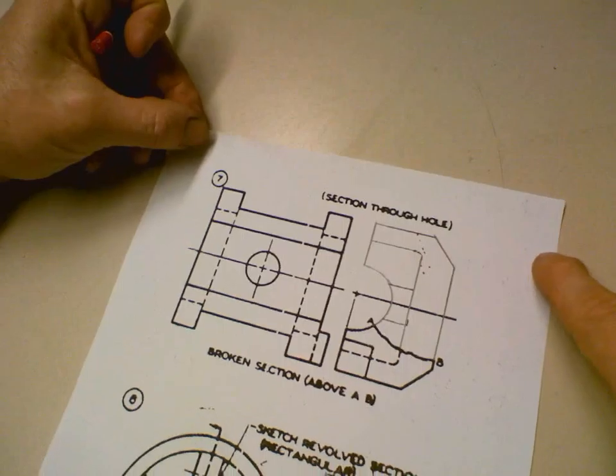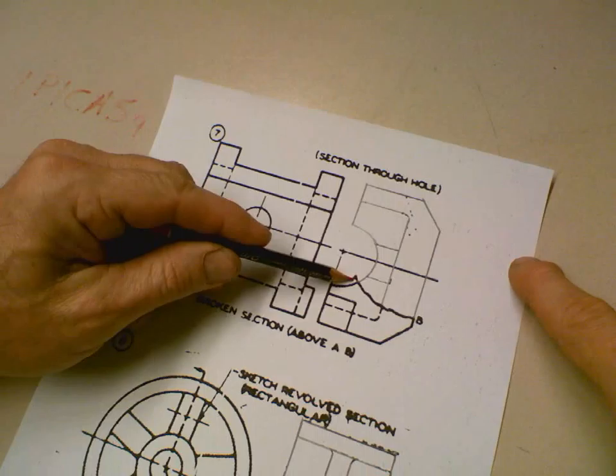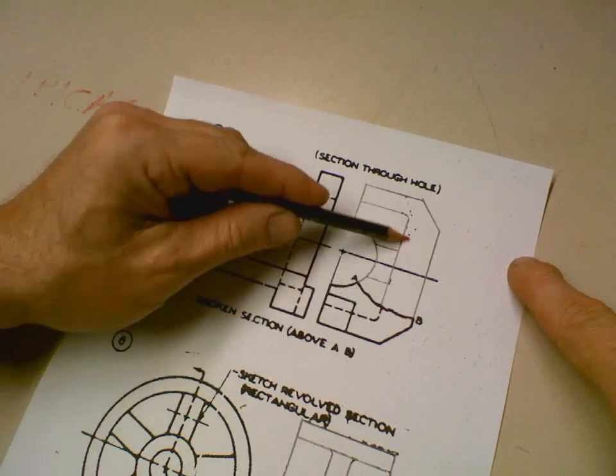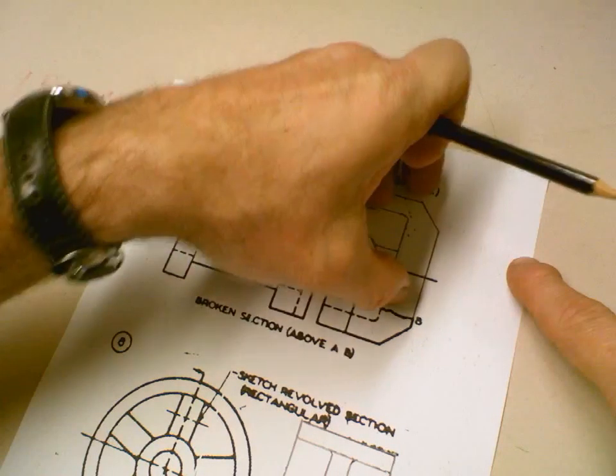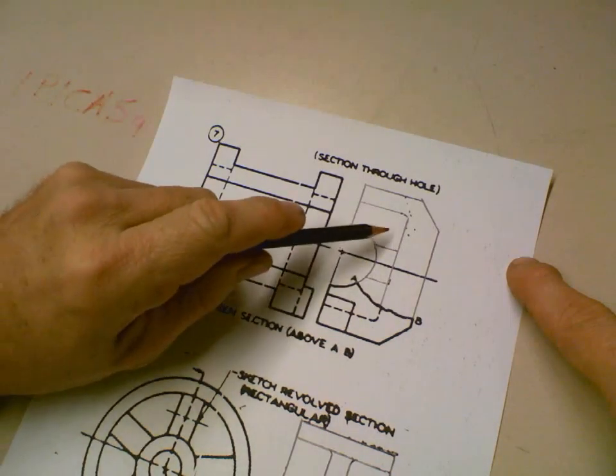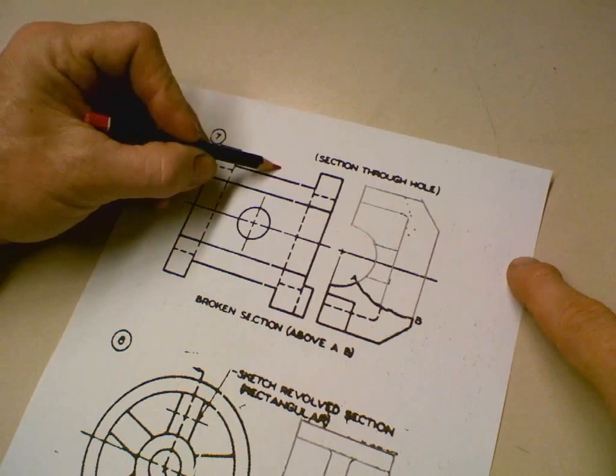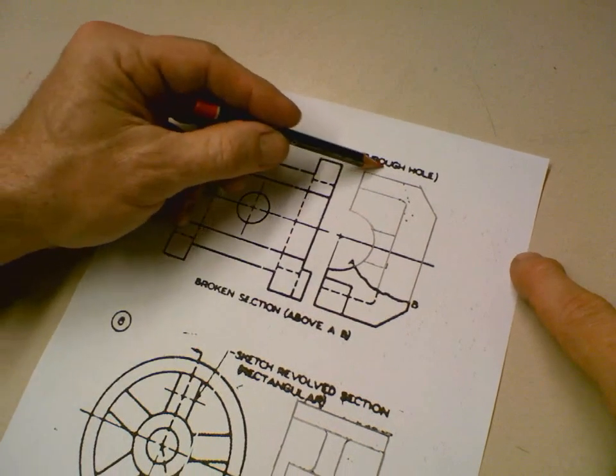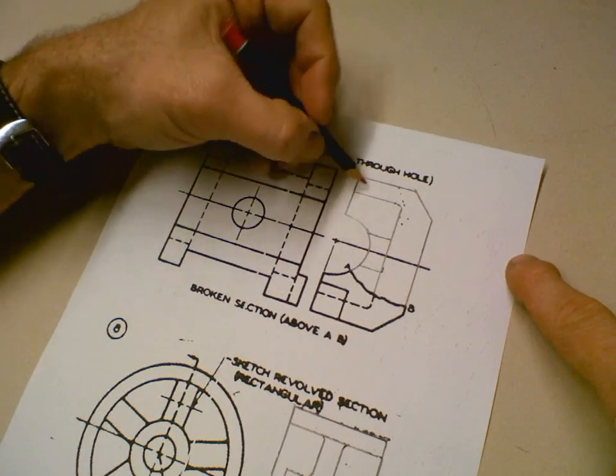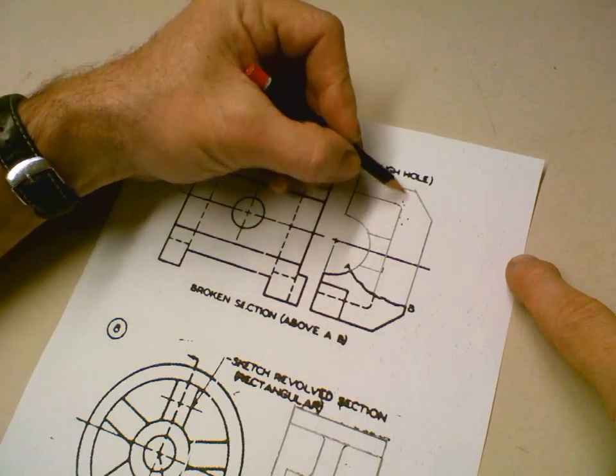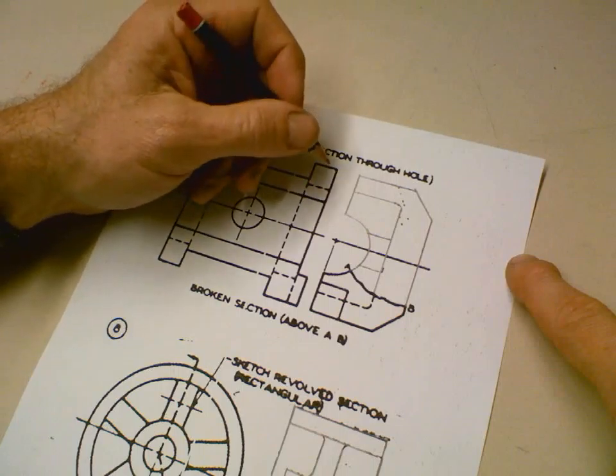Number seven, okay. This is a broken section. And this is a broken line A to B. And so anything above A and B up here, you're seeing the inside detail. So you're kind of like breaking part of it out so you can see the internal feature here. So it's basically if you were to take a, and it says broken section through hole, so you want to represent the hole here. And this is the flange on either side behind or beyond the side, behind the section.